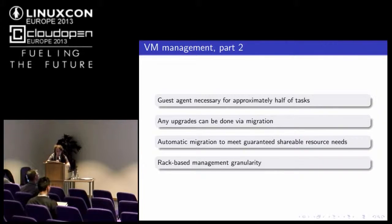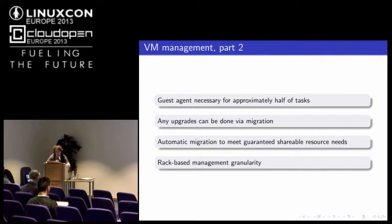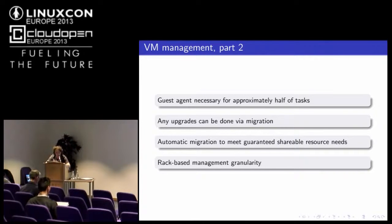Any upgrades — of a physical node, kernel upgrade, or emulator upgrade — can be done via migration. We can do seamless migration with Ceph because we have live migration and Ceph is distributed storage available from any point. We just push a button, wait a little, and the node will be free. Then we shut it down and do whatever maintenance is needed.